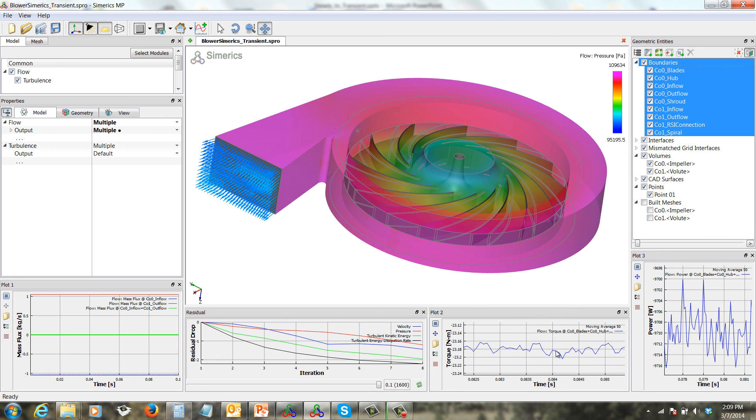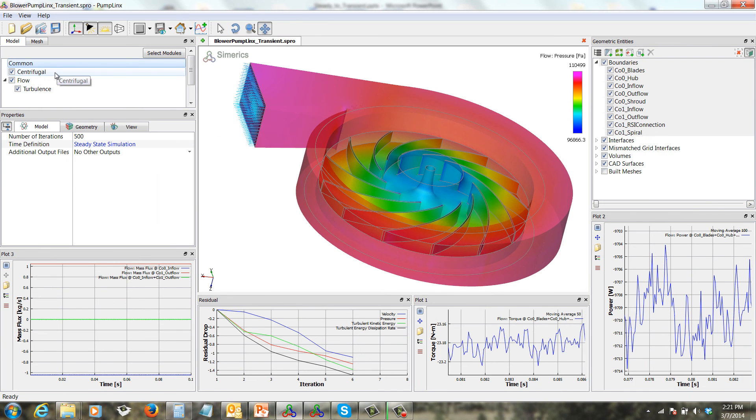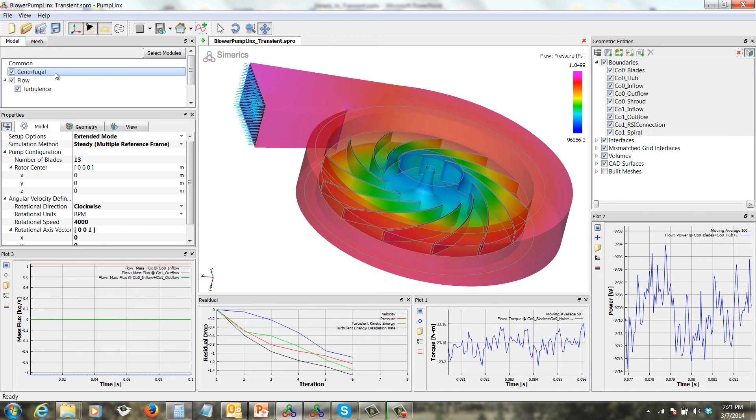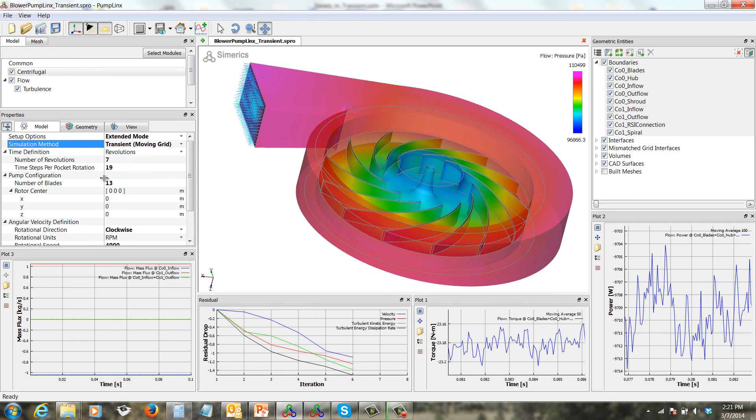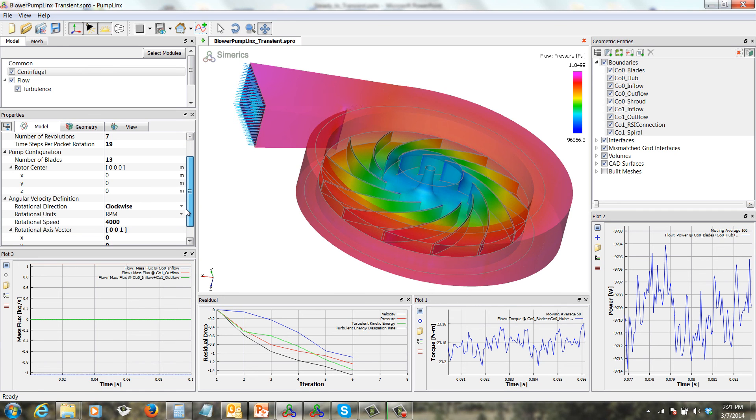Next I'll show you how to change a steady-state run to transient in PumpLynx. Here we are in PumpLynx with the same blower model. We go to the centrifugal module, and in the properties panel, we change the simulation method from steady to transient. We see here that the number of revolutions is 7 times steps per pocket rotation is 19. We can see we have 13 blades, and our RPM is 4000, and it's rotating about the z-axis.